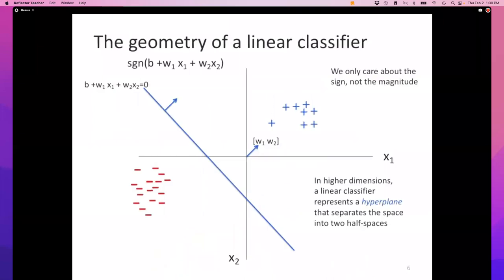The linear classifier has an intuitive geometry. It defines a line in two dimensions, a plane in three dimensions, and a hyperplane in d dimensions. This hyperplane slices the instance space into two parts, saying one side is positive and the other side is negative. Before we move on to the perceptron algorithm, just to make sure we're all on the same page, any questions about this?